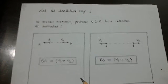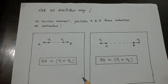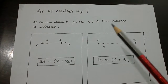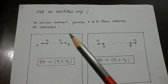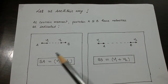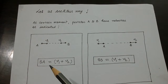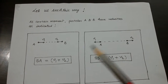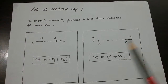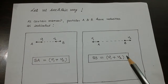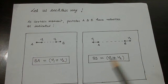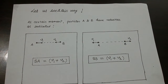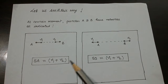Let us see it in this figure. At a certain moment, particles A and B have velocities as indicated. In this case, speed of approach is V1 plus V2. It is the same example, but in general notation. Similarly, speed of separation is V1 plus V2 when they move apart. There it was numerical — 10 meters per second — here it is V1 and V2 respectively.